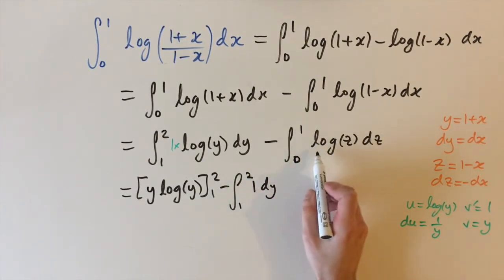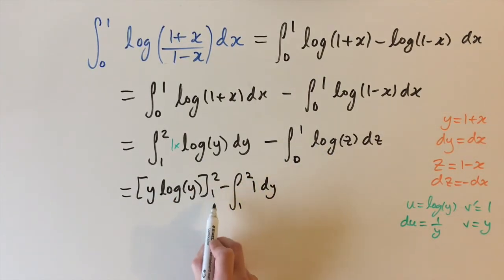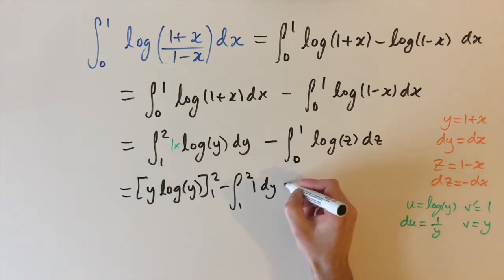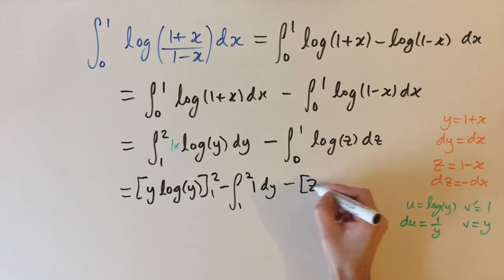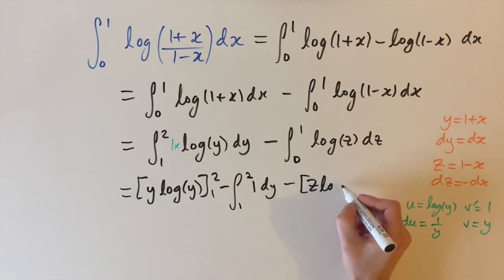And then this integral is exactly the same we just do the same thing and we replace the limits 1 and 2 by 0 and 1. So I'll just write this out we have minus z log z because we used the variable z this time, z log z through the limits 0 and 1.